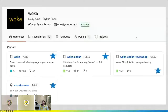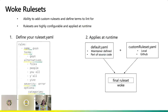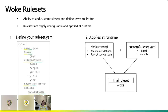Before we dive into the demo on Woke, I wanted to set some concepts. Woke uses the idea of a rule set — think about a rule set as the defined terms that we're going to lint for. The cool part about Woke is that you have the ability to build out your own rule set based on a predefined schema. Rule sets are highly configurable, applied at runtime, and you can store them both locally and in GitHub.